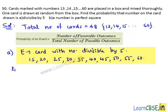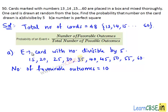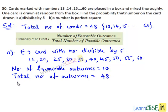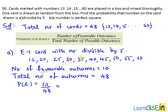The number of favorable outcomes equals 10, which are cards with numbers 15, 20, 25, and so on up to 60. Total number of outcomes equals total number of cards, that is 48. Then P(E) equals 10 divided by 48. Here 2 is a common factor; 2 goes into 10 five times and 2 goes into 48 twenty-four times. Therefore, the probability of getting a card with a number divisible by 5 is 5/24.